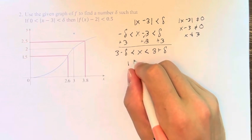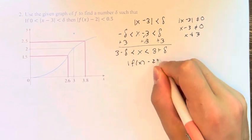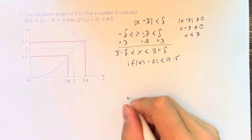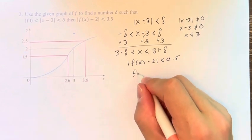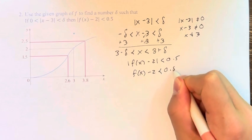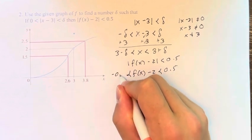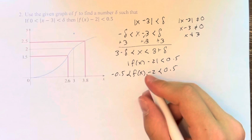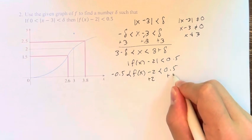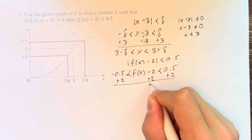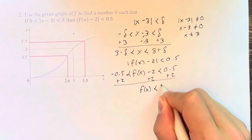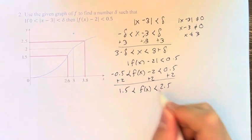And we also have that the absolute value of f of x minus 2 is less than 0.5. So very similarly, this means that it is less than 0.5 and greater than negative 0.5. And if we add 2 here to solve for f of x, we get that f of x is less than 2.5 and greater than 1.5.